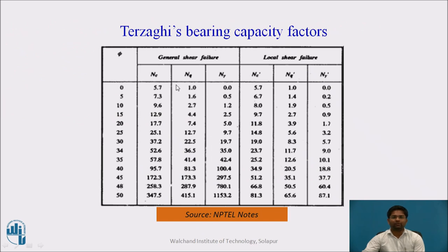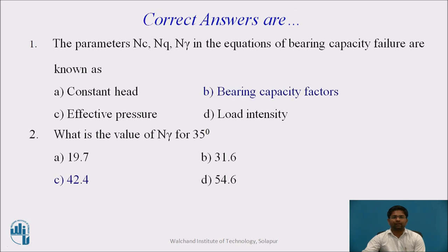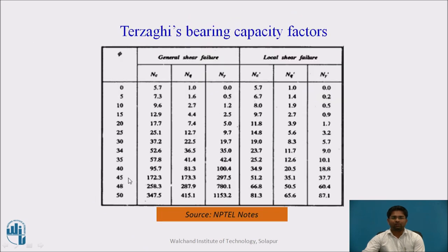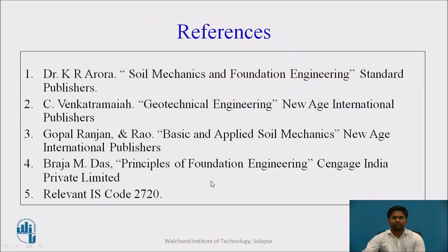We are going to determine Terzaghi's bearing capacity factors using this chart, for general shear failure and local shear failure, for corresponding friction angle. These are the Nc, Nq, and Ngamma values. The parameters Nc, Nq, Ngamma in the bearing capacity equation are known as bearing capacity factors. For 35 degrees, the value of Ngamma is 42.4 from this chart. For 45 degrees, the value of Ngamma is also 42.4. These are the references for the preparation of this video lecture. Thank you.